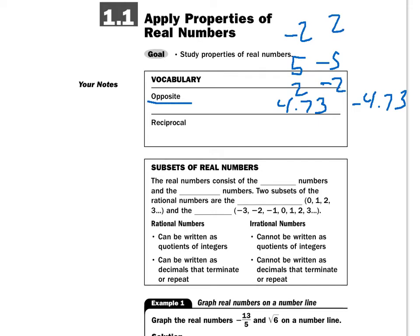And reciprocals would be flipping them upside down. So if I have 2 thirds, the reciprocal of 2 thirds, 3 halves. If I have the number 5, the reciprocal of the number 5. Well, 5 is really 5 over 1. So the reciprocal of 5 over 1 is 1 over 5. So those are reciprocals.